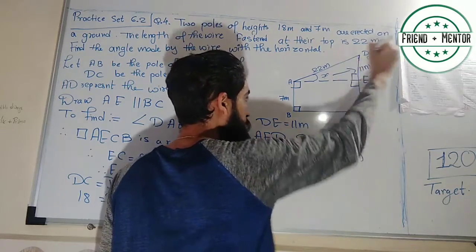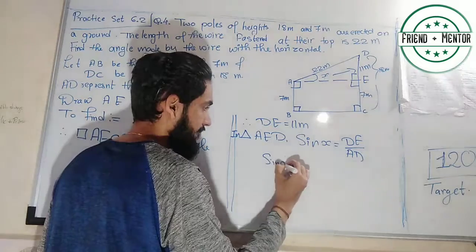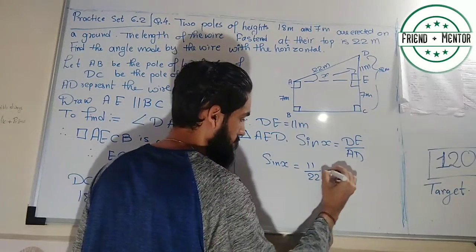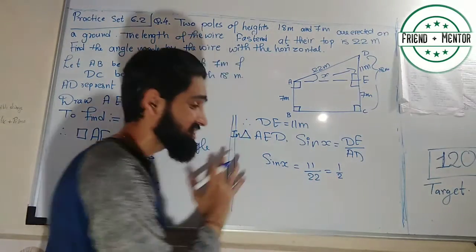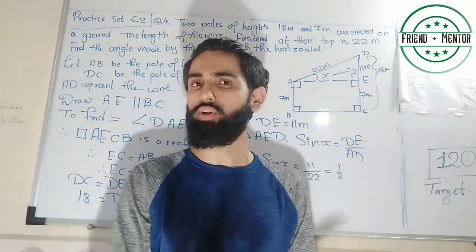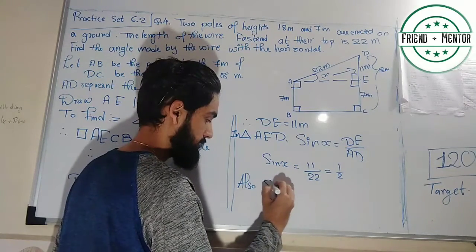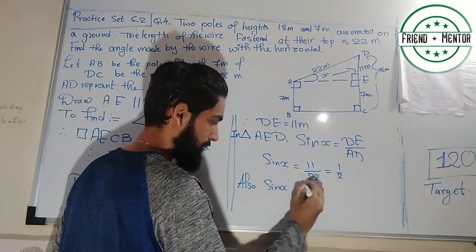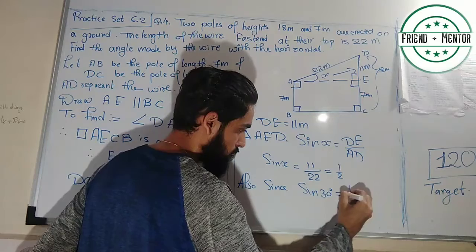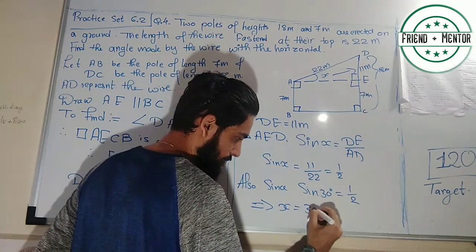The opposite is DE and hypotenuse is AD. Sine x is equal to 11 by 22, that is 1 by 2. The value of sine is 1/2 when the angle is 30 degrees. Since sine of 30 degrees equals one half, this implies x equals 30 degrees.